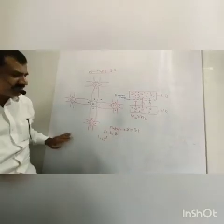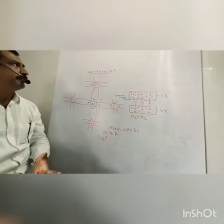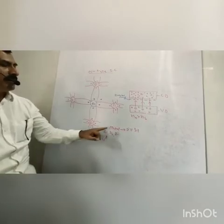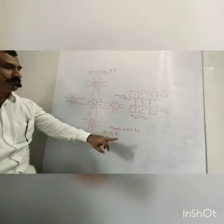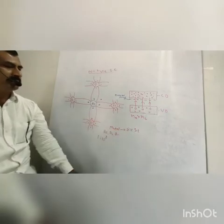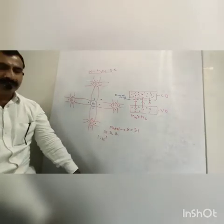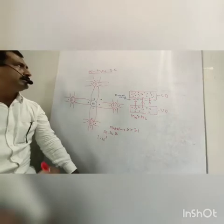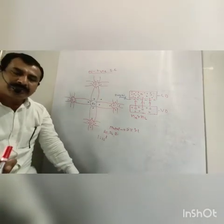N-type semiconductor. When the pentavalent impurities are added to the silicon or germanium, then an N-type semiconductor is produced.